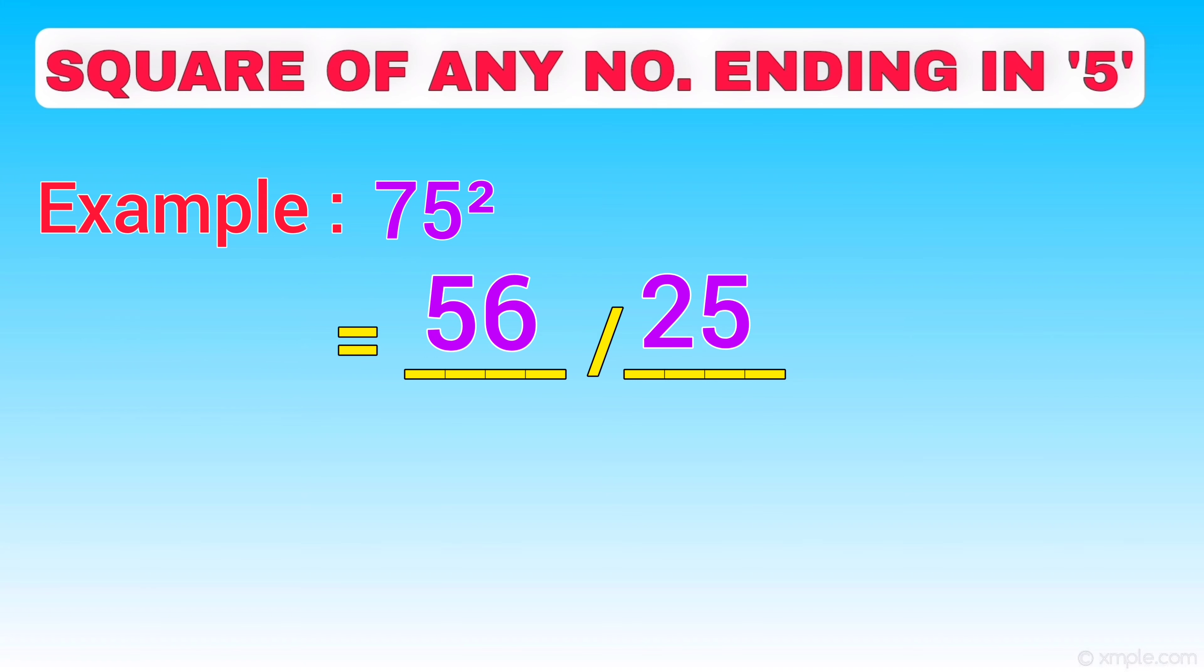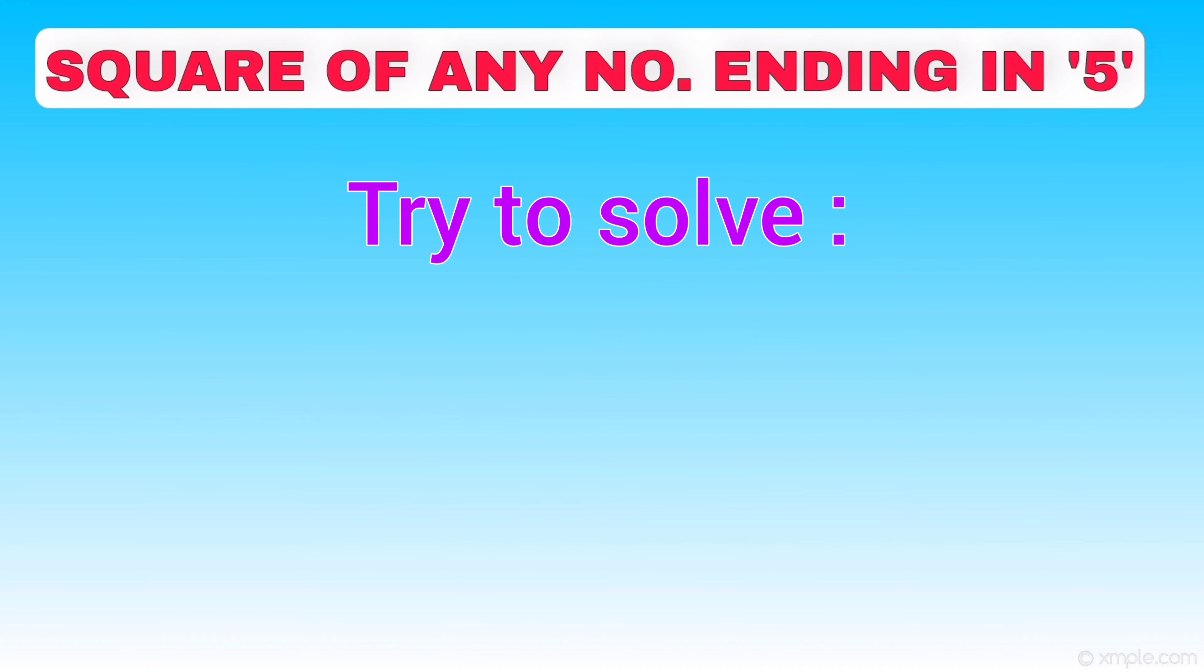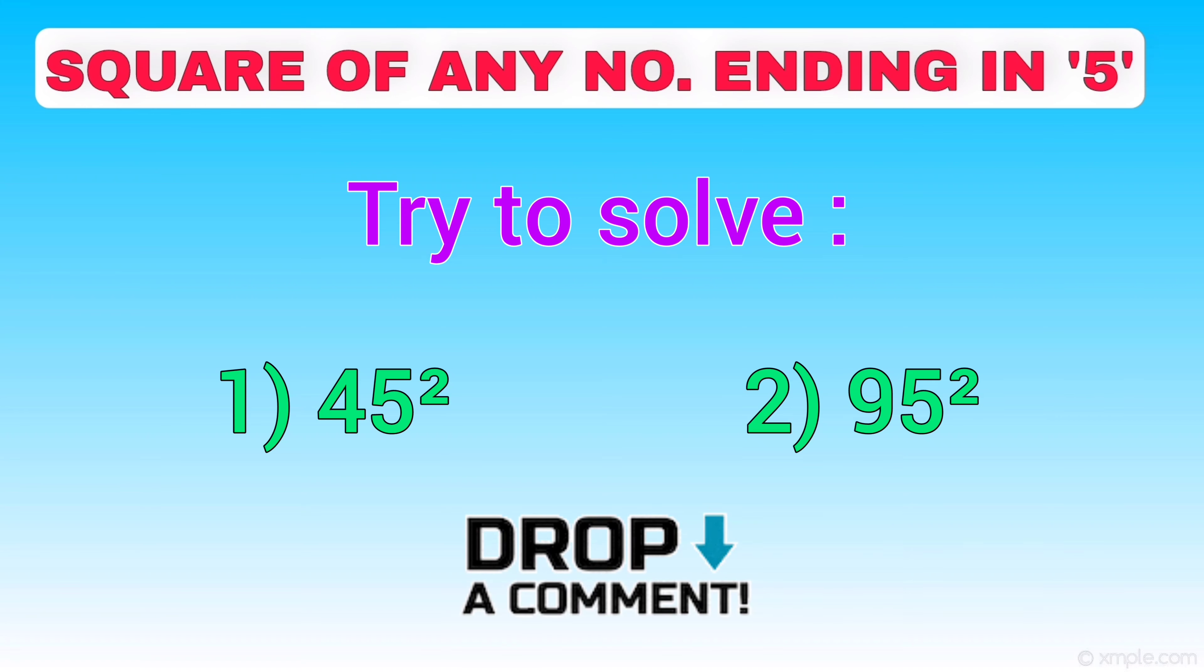Therefore, 75 square is equal to 5625. Friends, using the trick, try to solve squares of 45 and 95 and comment your answers in the comment section below.